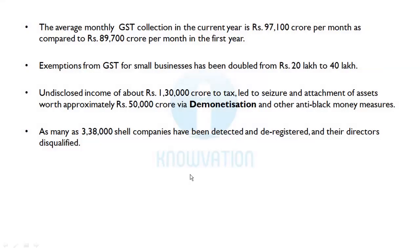The average monthly GST collection this year is Rs. 97,100 crore per month, compared to Rs. 89,700 crore per month in the first year — showing that GST collection has significantly improved. The exemption from GST for small businesses has been doubled from Rs. 20 lakh to Rs. 40 lakh, meaning businesses with turnover up to Rs. 40 lakh are now exempt from GST — another populist measure in this budget.